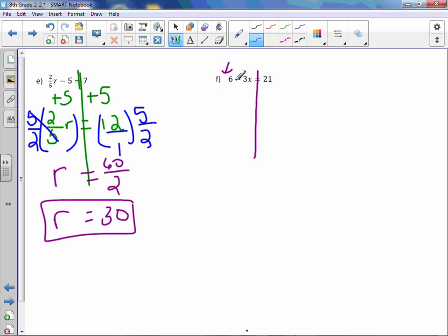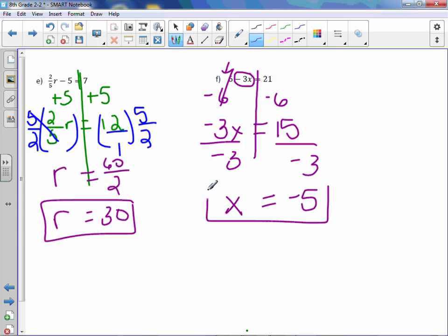If I were to hide everything else in the equation, you would see a positive 6. To get rid of a positive 6, we would subtract it from both sides. Bring down everything, including the negative sign. So negative 3X equals, and 21 minus 6 is 15. Divide both sides by negative 3, and we get X equals negative 5.